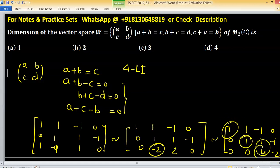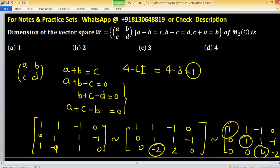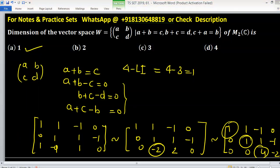So we have three pivot elements, means three LI conditions. So four minus three equals to one, option A is correct. Next row, please. Thank you.